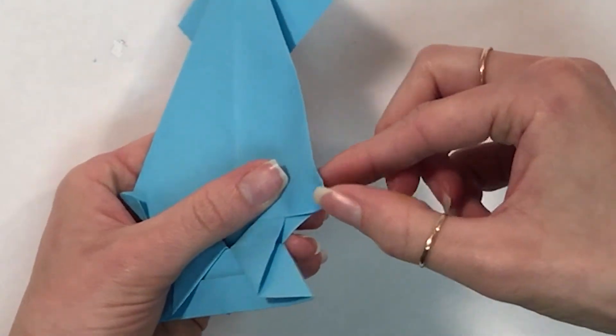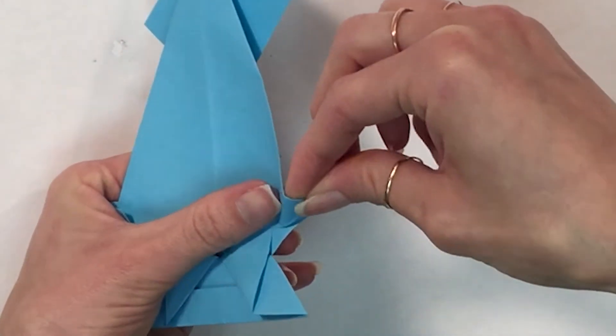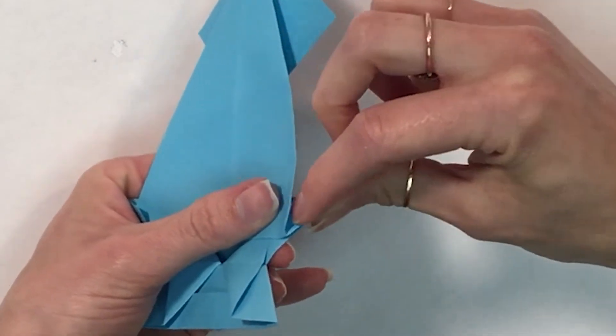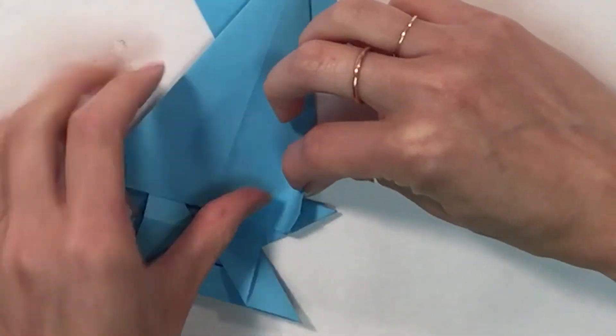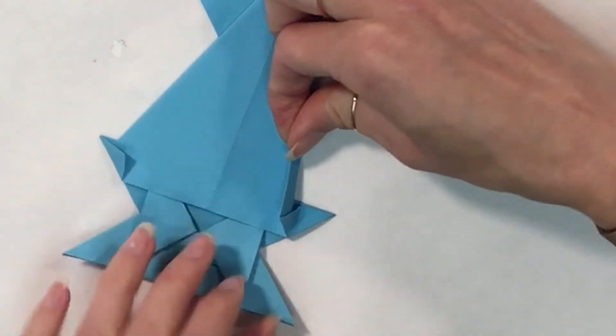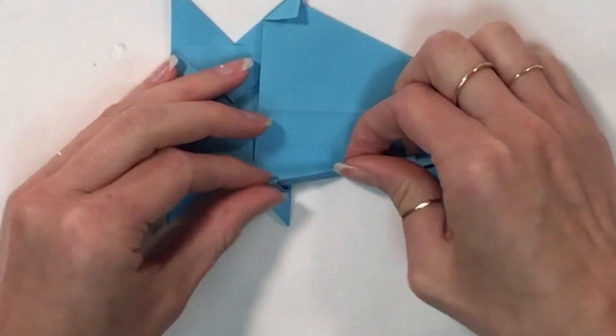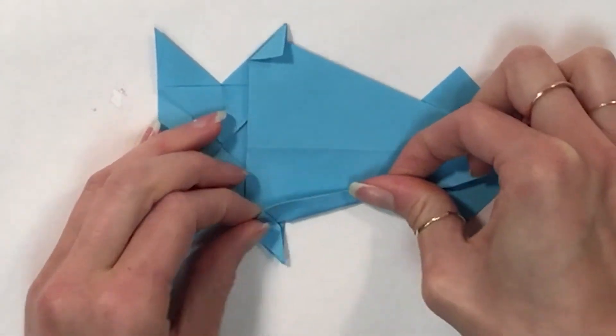And you will notice there is a diagonal line here. I'm going to reverse that diagonal and roll the edge so that my triangle flattens down.